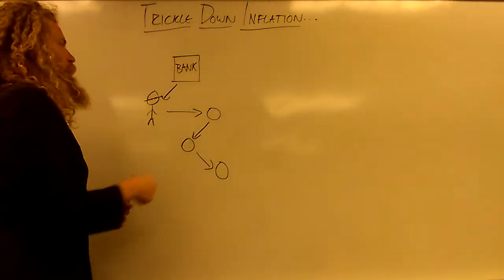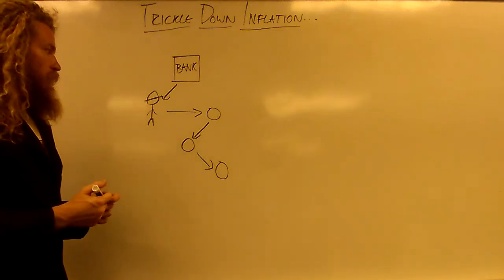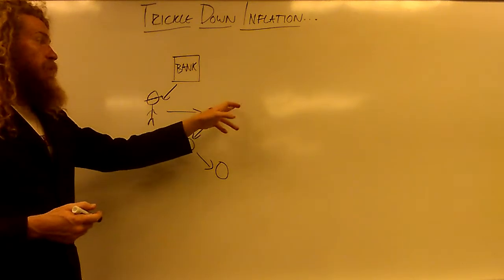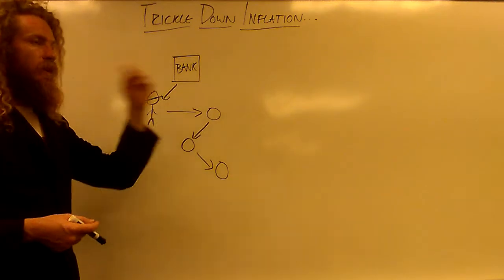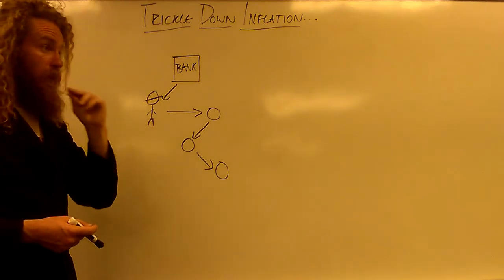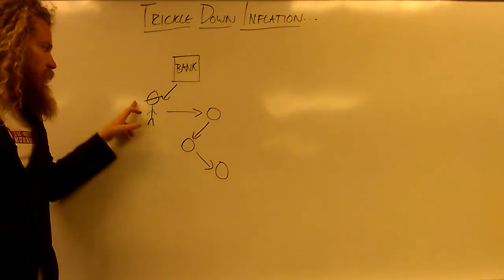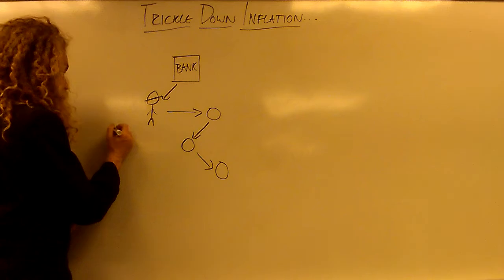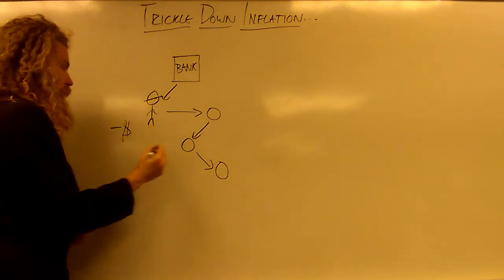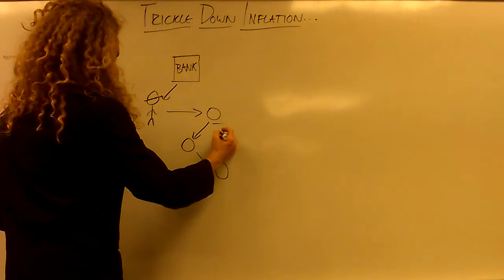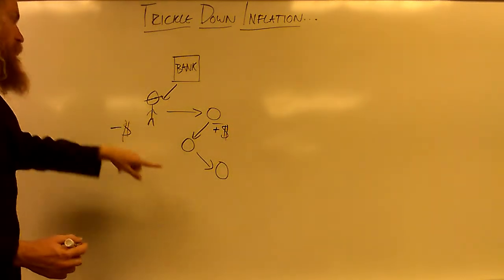Banks create money and people borrow it — it could be for anything: buying a house, college tuition, a car, anything. When someone borrows it, they go into debt — they have negative money — but the money goes right into their hands as positive money.